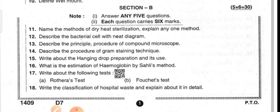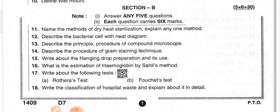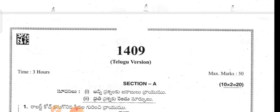Answer any five questions. Name the methods of dry heat sterilization and explain any one method. Describe the bacterial cell with a neat diagram. Describe the principle and procedure of the compound microscope. Describe the procedure of gram staining technique. Write about the hanging drop preparation and its use. What is the estimation of hemoglobin by the Sahli's method? Write about Rothera's test and Ocher's test. Write the classification of hospital waste and explain it in detail.